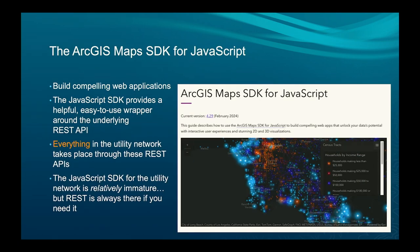On the web, we have the Maps SDK for JavaScript. What's interesting about this API is that everything in the utility network goes through a REST API. So if there are places in the JavaScript API where we don't yet have complete support, you can always do an end run around and use the REST endpoint directly.